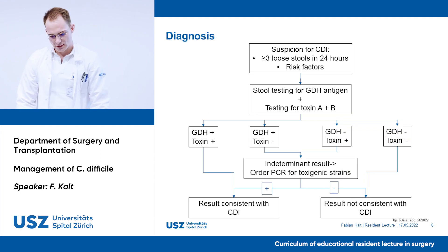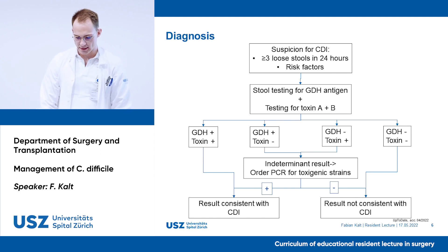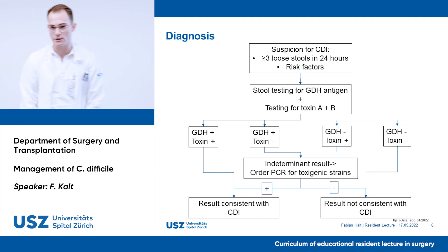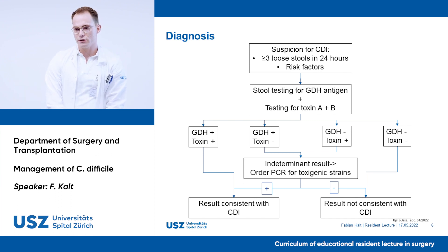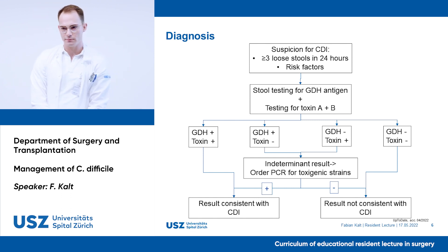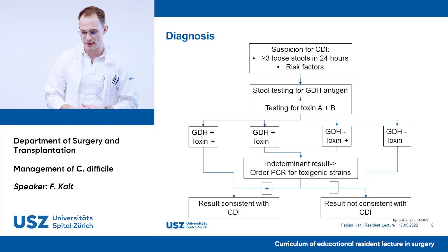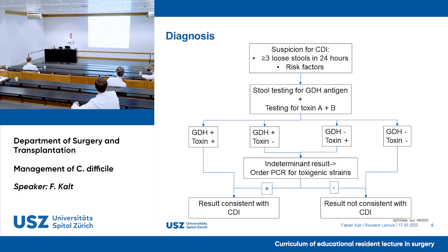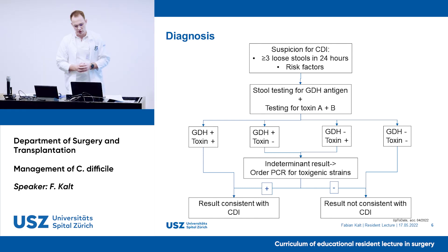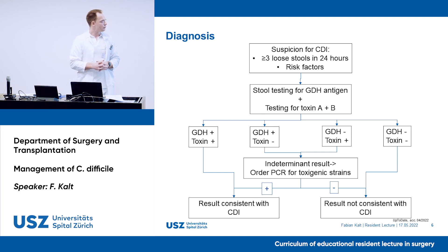This is probably one of the most important slides in this presentation — it shows the diagnostic workup in a suspected CDI. First, collect a stool sample if you suspect CDI. Then test for GDH, which is an enzyme produced by both toxigenic and non-toxigenic strains. Since only toxigenic strains cause CDI, you also test for the toxin itself via immunoassay. If you get an indeterminate result from either test, you clarify via PCR, and then you end up with either a confirmed or excluded CDI.